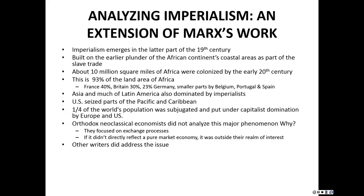About 10 million square miles of Africa were colonized by the early 20th century, which is about 93% of the land area of Africa. The major imperialists were France and Britain, with 40 and 30% of this land area under their colonized rule. About a quarter of this colonized area was dominated by Germany. Some other imperialists were also involved — Belgium, Portugal, and Spain.